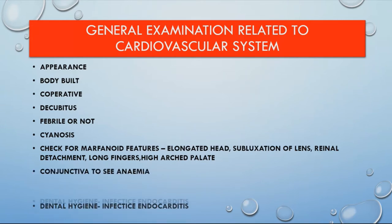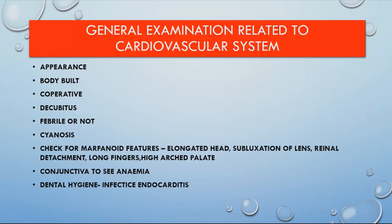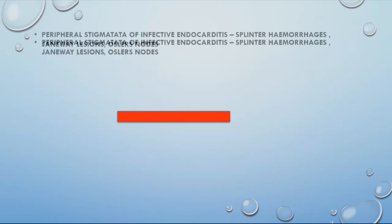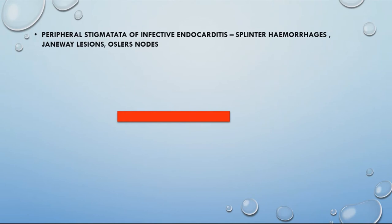Check the conjunctiva for anemia, and assess dental hygiene — this is important in cases of infective endocarditis. Then examine fingers and toes for clubbing and peripheral stigmata of infective endocarditis, such as splinter hemorrhages, Janeway lesions, and Osler nodes.